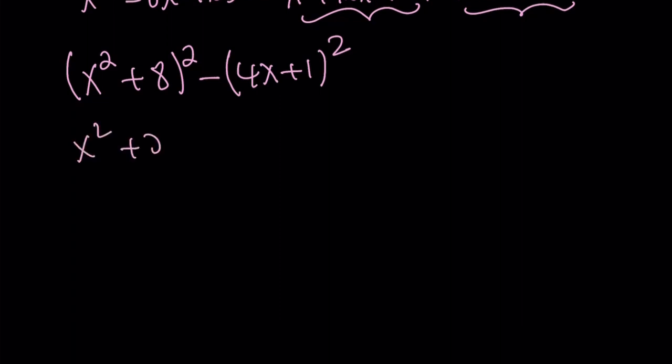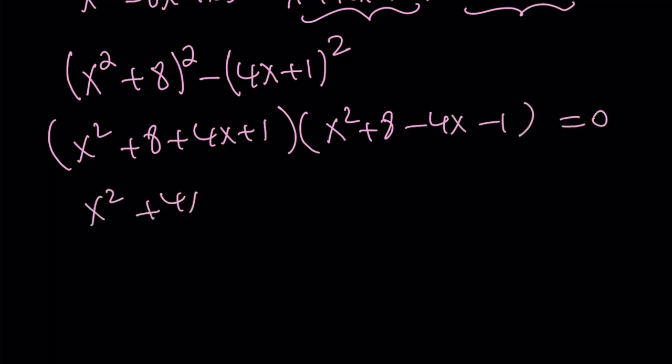We can go ahead and factor it. x squared plus 8 plus 4x plus 1. That is multiplied by x squared plus 8 minus 4x minus 1 equals 0. And from here, we get x squared plus 4x plus 9. And x squared minus 4x plus 7. The product is equal to 0.